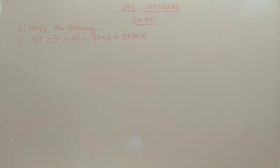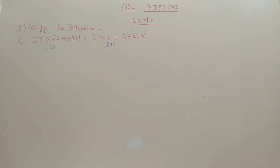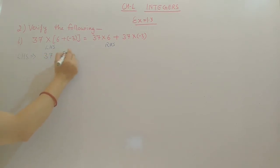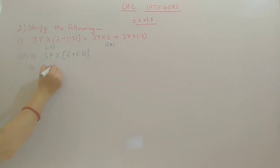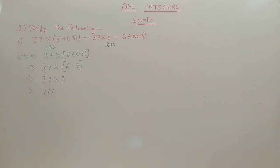Question number 2: verify the following. In this type of question, you have to verify that the left side equals the right side. First we will take the left side. 37 into (6 plus minus 3) — plus and minus become minus, so 37 into (6 minus 3) equals 37 into 3, which is 111. So we got the left side.